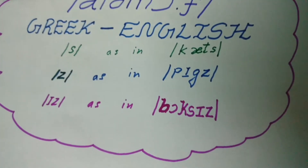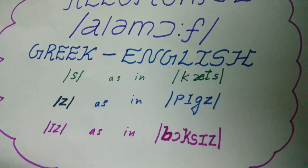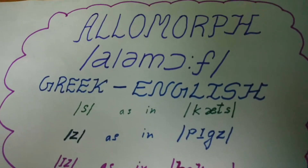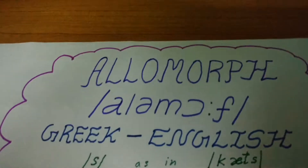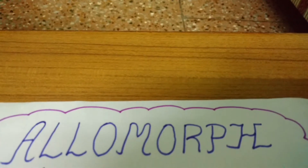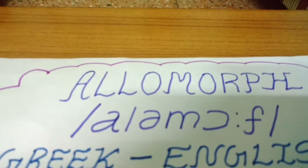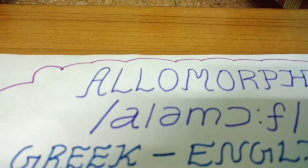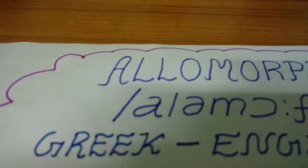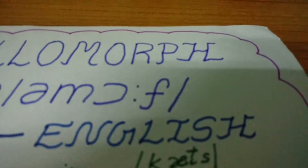Let us see a few examples of morpheme variation and how allomorphs are formed. The term allomorph has its origin in Greek and English.